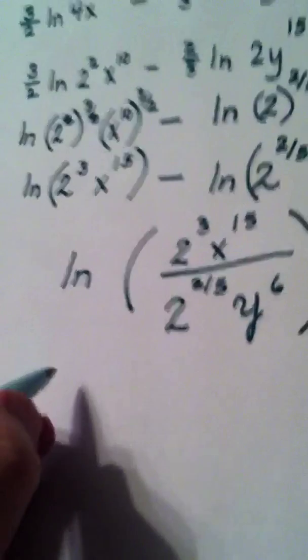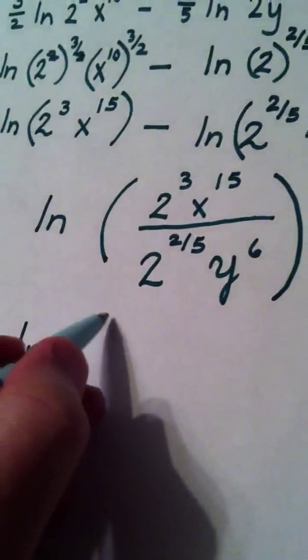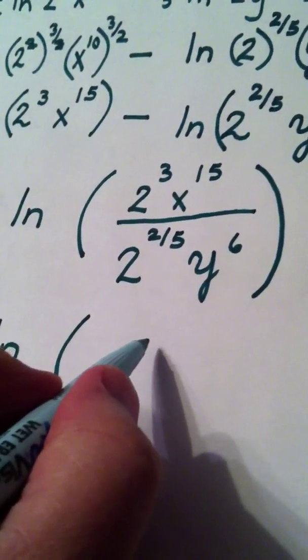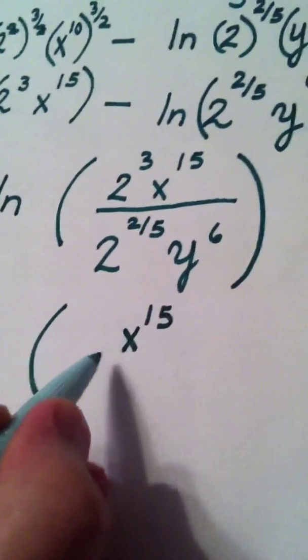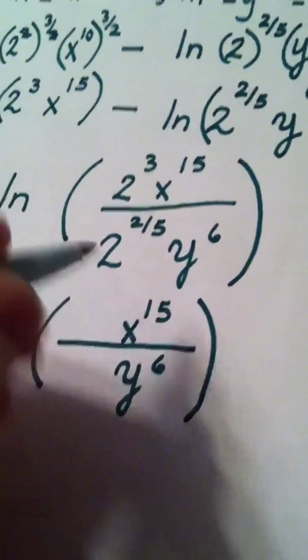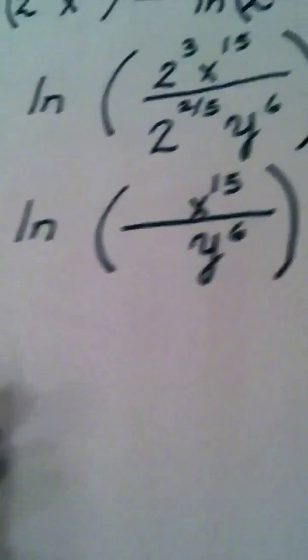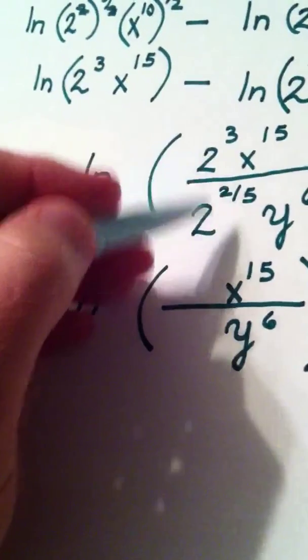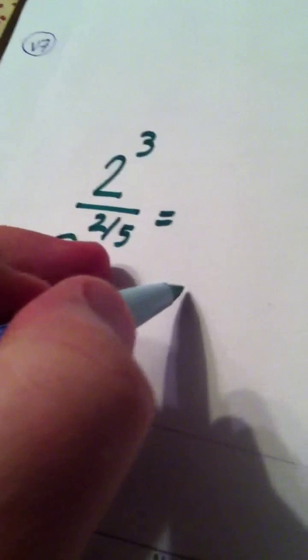Now, here is why I had you get a base of 2 earlier. We have the natural log of... Now, there's nothing that I can do with the x to the 15th other than leave it. There's nothing I can do with the y to the 6th other than leave it. But, I can simplify 2 to the 3rd divided by 2 to the 2 fifths. Watch what we're going to do. You know that when you're dividing, exponents get subtracted.